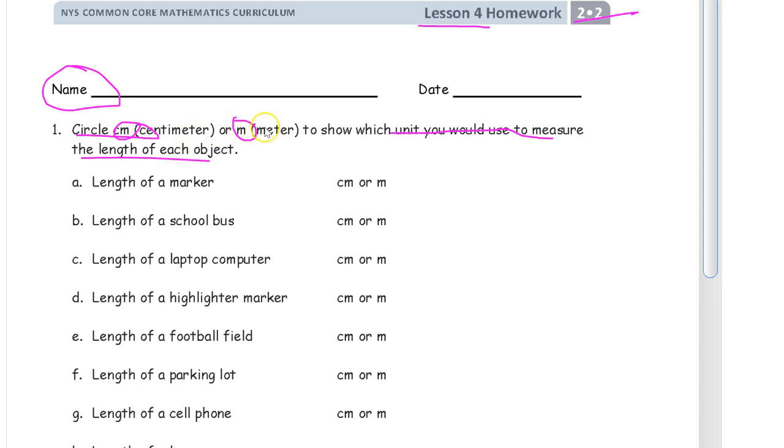Centimeters are small. Meters are longer. We're going to use meters to measure longer things and centimeters for smaller things. So, like the length of a marker, a meter stick is way too long for that. So, centimeters.